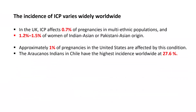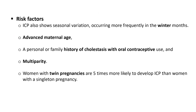The incidence of ICP varies widely worldwide. In the UK, the incidence is 0.7%, up to 1.5% in women of Indian or Pakistani origin; approximately 1% in the USA; and the highest in Chile at 27.6%. Risk factors include seasonal variation — it occurs more frequently in winter — advanced maternal age, personal or family history of cholestasis with oral contraceptive use, multi-parity, and twin pregnancies, which are five times more likely to develop ICP.